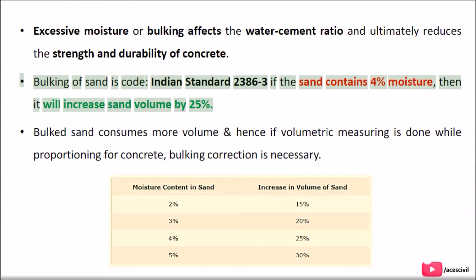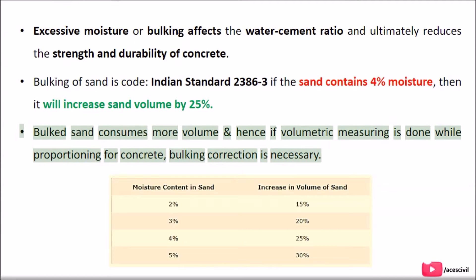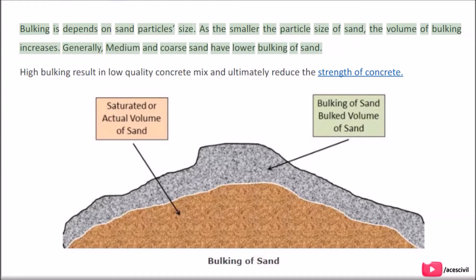Bulking of sand is covered under Indian Standard IS 2386-3. If the sand contains 4% moisture, then it will increase sand volume by 25%. Bulked sand consumes more volume, and hence if volumetric measuring is done while proportioning for concrete, bulking correction is necessary. Bulking depends on sand particle size — the smaller the particle size of sand, the greater the volume of bulking.